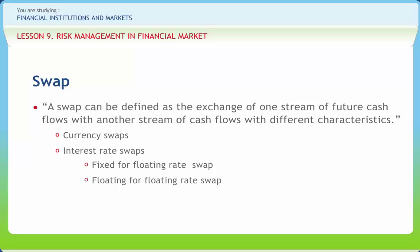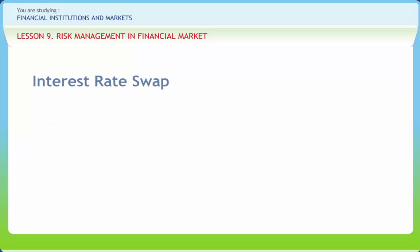Floating-for-floating rate swap (different currencies): Party P pays or receives floating interest in currency A, indexed to X, to receive or pay a floating rate in currency B, indexed to Y, on a notional N at an initial exchange rate of FX for a tenure of T years.